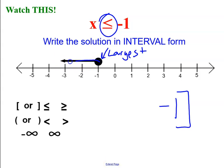Now, what is the lowest value? Well, the lowest value is an arrow. So that would be negative infinity. And remember, infinity or negative infinity always gets a parentheses.